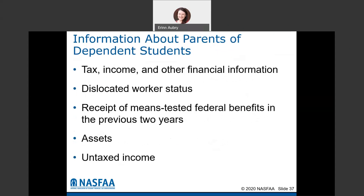Information required from parents of dependent students includes taxes, income, other financial information, dislocated worker status, means-tested federal benefits received in the previous two years, assets, and non-tax income. The same information will be asked about the student, and if the student is married, about their spouse as well.